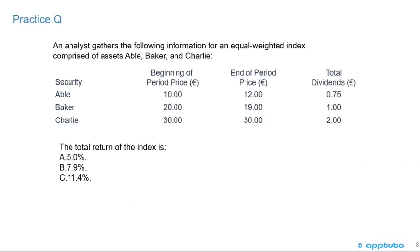To finish this LOS, here's a practice question on total return using the same data. An analyst gathers information for an equal-weighted index of assets A, B, and C with the same beginning prices, ending prices, and total dividends as before. This time the question asks for the total return of the index. Is it A, 5%; B, 7.9%; or C, 11.4%?